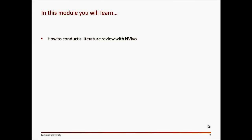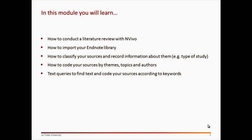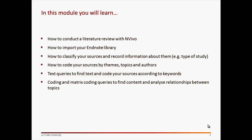In this module you will learn how to conduct a literature review with NVivo and what steps can be followed. How your EndNote library can be imported and how the sources and information you have in EndNote will be stored in NVivo. How to classify your sources to record relevant information about them, for instance the type of study and the methodology. How to code your sources by themes, topics and authors. What text queries you can use to find text and code your sources according to keywords. Coding and matrix coding queries to help you find specific content according to topics and themes, and to analyze relationships between topics. And finally, how to create a model to visually represent your ideas.